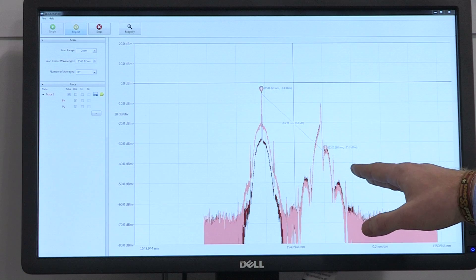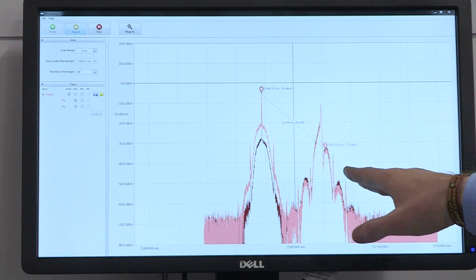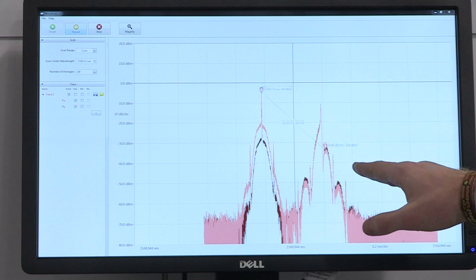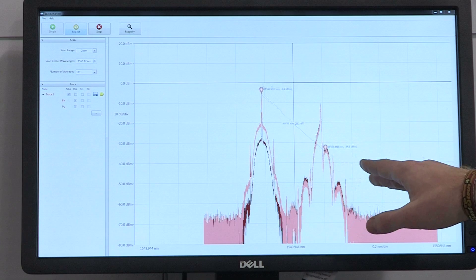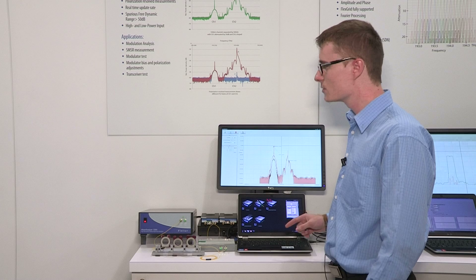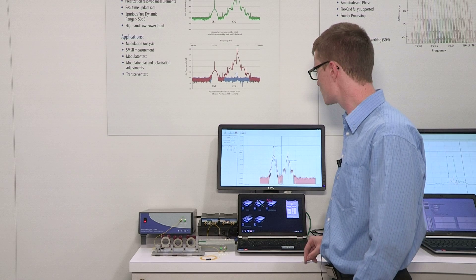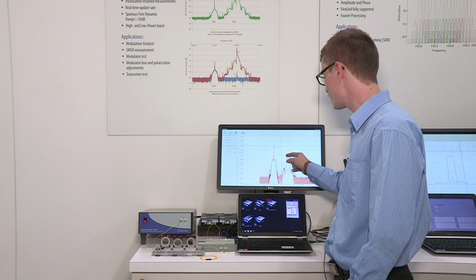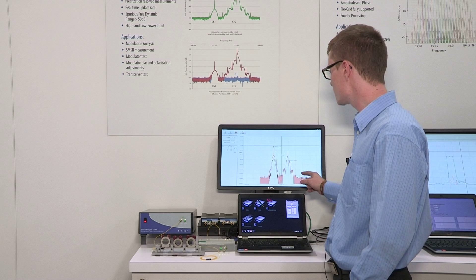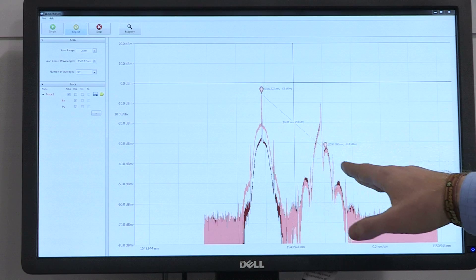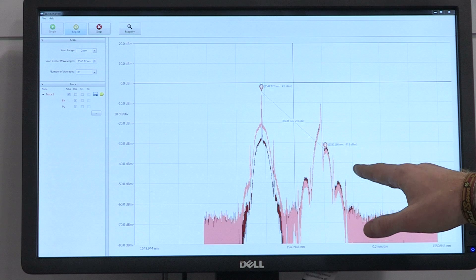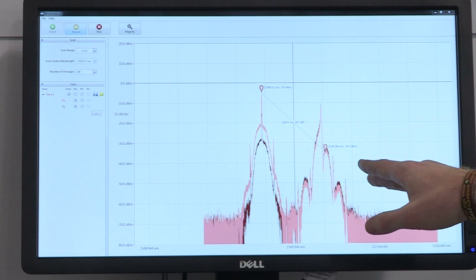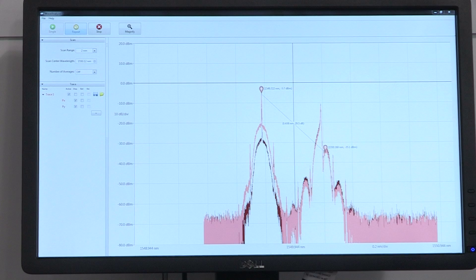Here on the screen, we're taking a measurement of the spectral power signature of both XFP sources. We're taking a measurement of both X and Y polarizations together as indicated by the two traces. We have two markers here and the line between the markers shows the difference in power between both markers and the difference in frequency.